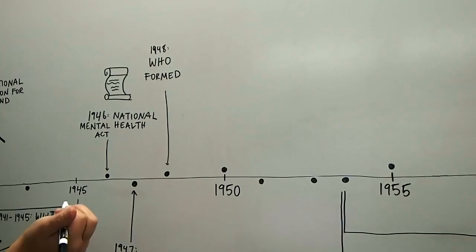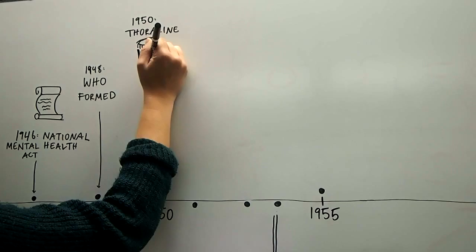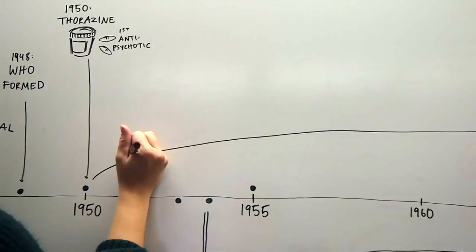In 1950, Thorazine, the first ever antipsychotic drug, was approved by the FDA. This drug is often credited as a catalyst for the deinstitutionalization movement, as it quieted the public sphere of the, quote, mentally insane, unquote, being a part of society.